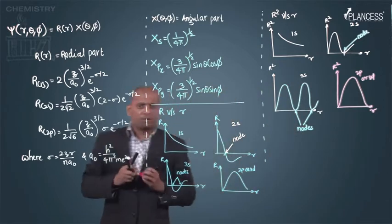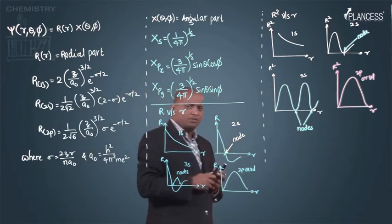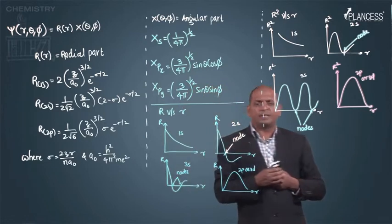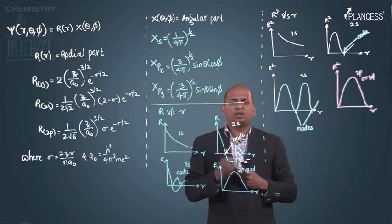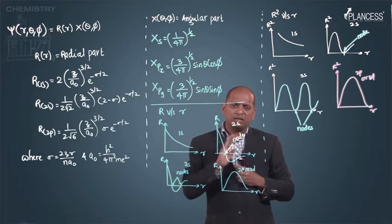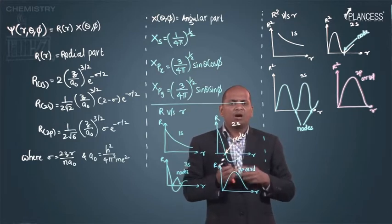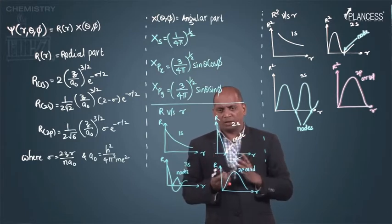In JEE, there may be a question based on this: which of the following represents a graph for 2s orbital? What we need to check is what versus what - that is the first thing.